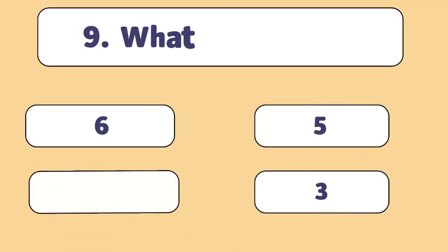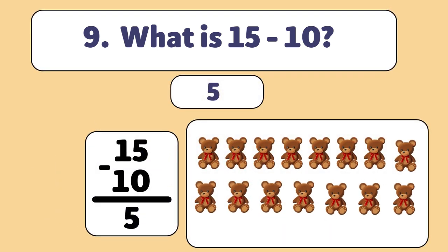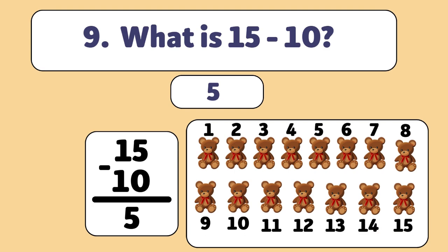What is 15 minus ten? The answer is five. We start with 15 teddy bears and take away ten. Let's count. One, two, three, four, five, six, seven, eight, nine, ten. We have five teddy bears now.